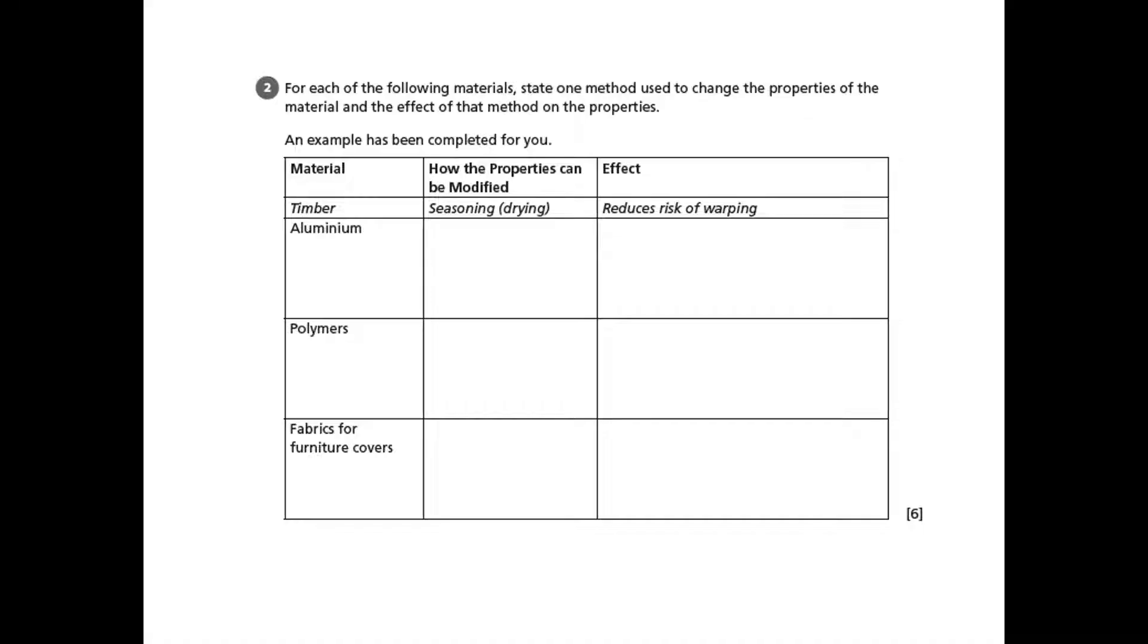We've got an example in there as well and we've been given a material and how the property can be modified, seasoning in this case. Timber can be seasoned which is a controlled drying process and the effect of that is that it reduces the risk of warping.